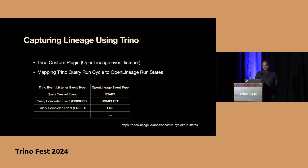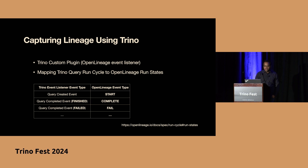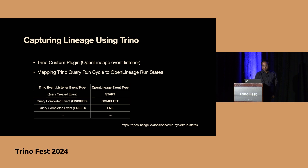Here is the event mapping: when a query is created, we take the query context and convert it to an open lineage START event. When the query is completed, we convert it to an open lineage COMPLETE event. If the query fails, it goes as an open lineage FAIL event. Along with all these event types, additional contextual information is passed, such as input and output datasets, processing engine versions, and a few additional runtime facets.